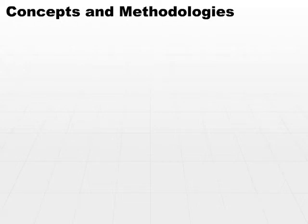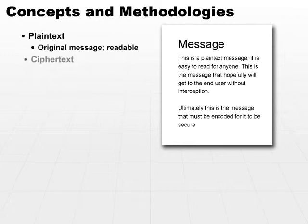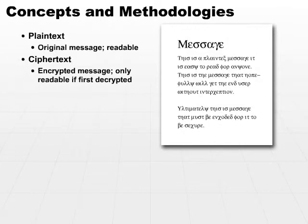Let's first look at a few terms. Plain text is what we use to refer to the original message. It's readable — it's the actual stuff that you want your receiver to receive in the end. Cipher text is the message after it's been encrypted. It's only readable if it's first decrypted.